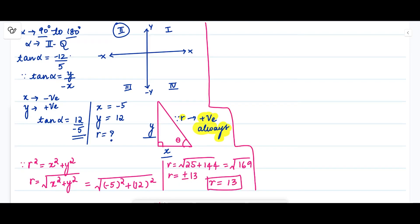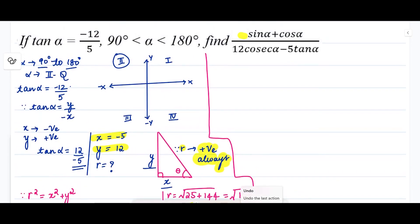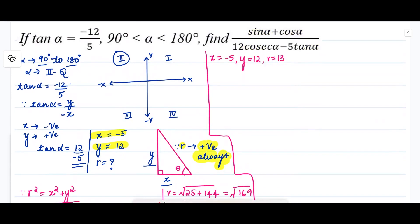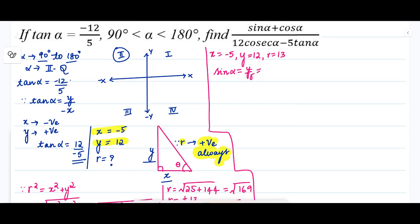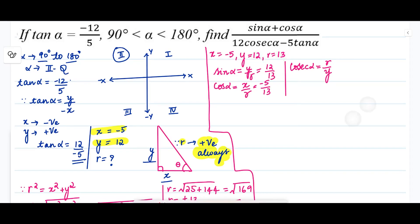Now we have x = -5, y = 12, and r = 13. We find each trig value: sin α = y/r = 12/13; cos α = x/r = -5/13; cosecant α = r/y = 13/12 (the reciprocal of sin α); and tan α = y/x = 12/(-5) = -12/5.